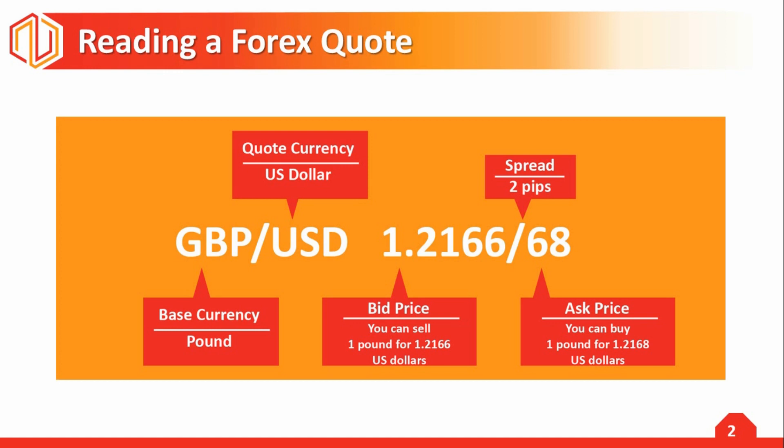No matter which currency is the base currency — whether dollar, pound, or any other — the base currency is always equal to 1. The quoted amount of 1.2166 is the amount of the quote currency in dollars which it takes to equal one unit of the base currency in pounds. This basically means one pound equals 1.2166 dollars.